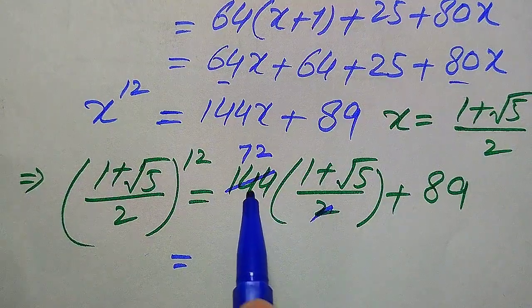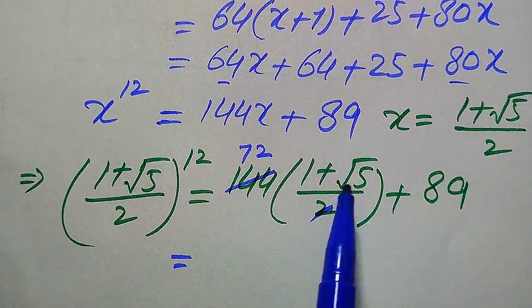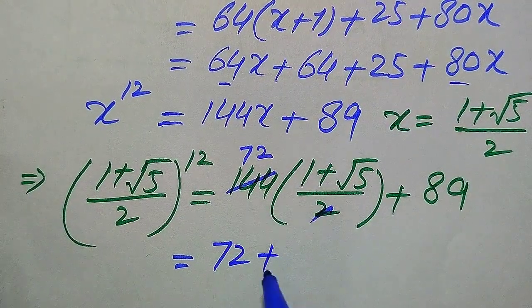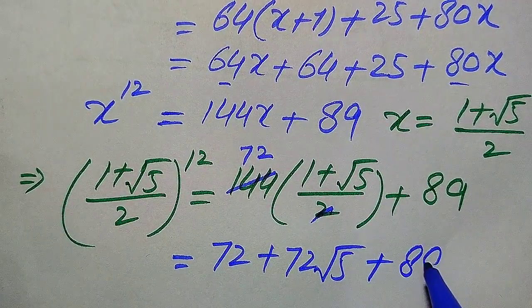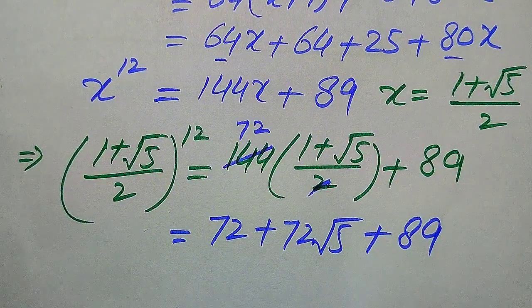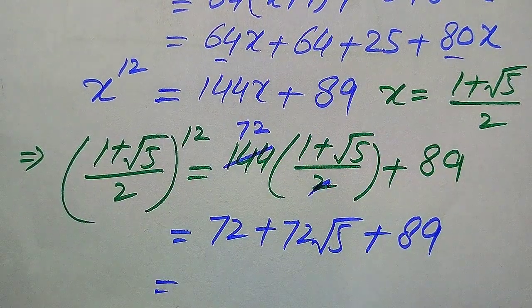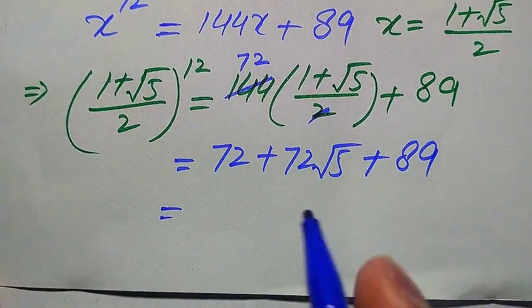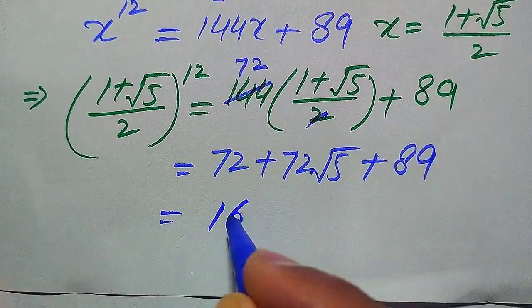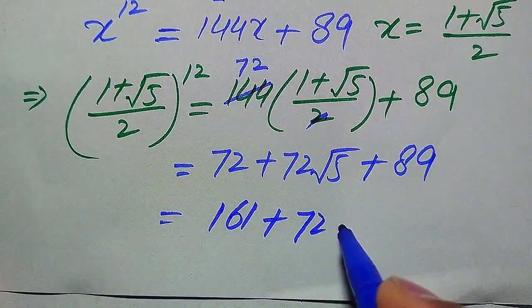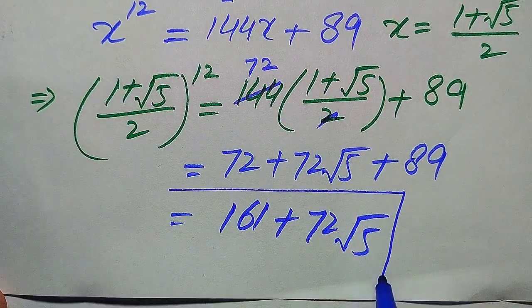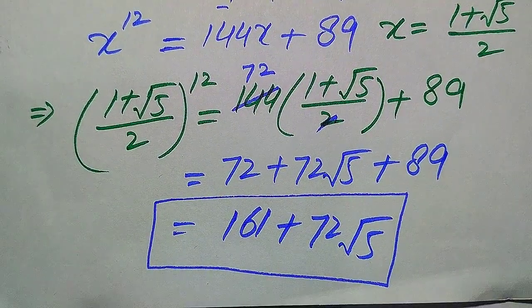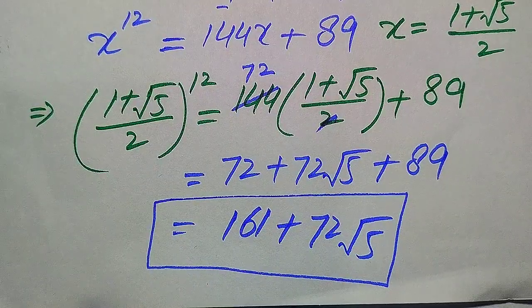Multiplying 72 on both values gives 72 plus 72 times square root of 5, plus 89. Summing 72 plus 89 equals 161. So the final answer is 161 plus 72 times square root of 5. This is the required simplified form of the given expression. Thank you so much for watching this video — please subscribe to my channel for more exciting videos.